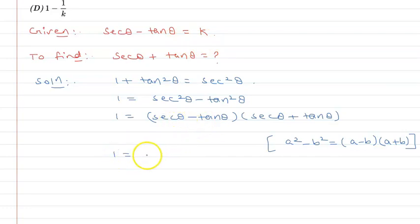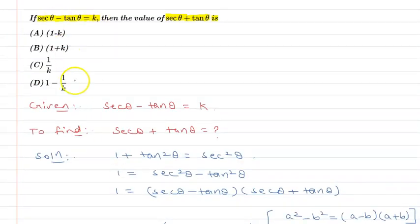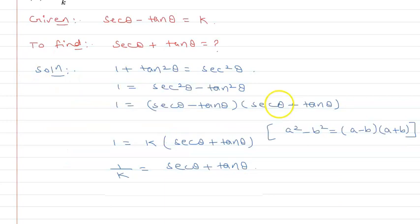So (sec θ minus tan θ) times (sec θ plus tan θ) equals 1. This is k times (sec θ plus tan θ). If k is in the denominator, then 1/k will equal sec θ plus tan θ.